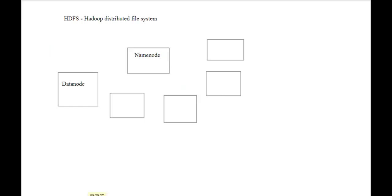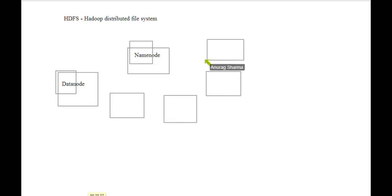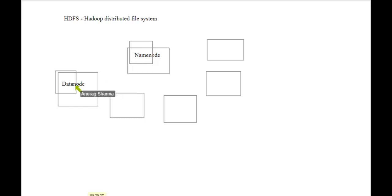Now let me tell you how the whole stuff works. Why is this called the NameNode, and why are these things called the DataNode? There will be only one NameNode and all others are called DataNodes. A DataNode is the place where the data is actually stored. So these are the places where your data is actually stored — hence the name DataNode.